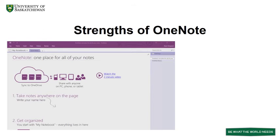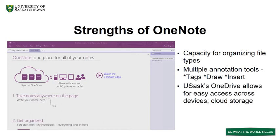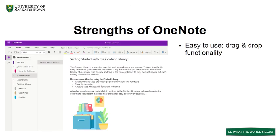Let's have a look at some of the strengths of OneNote. As a tool for portfolio building, OneNote has robust capacity for organizing file types and for supporting annotation. The Tags, Draw, and Insert tabs provide numerous options for annotating pages and providing feedback. Its place in USASC's OneDrive structure makes it easy to access on most connected devices, and everything is stored on the cloud.